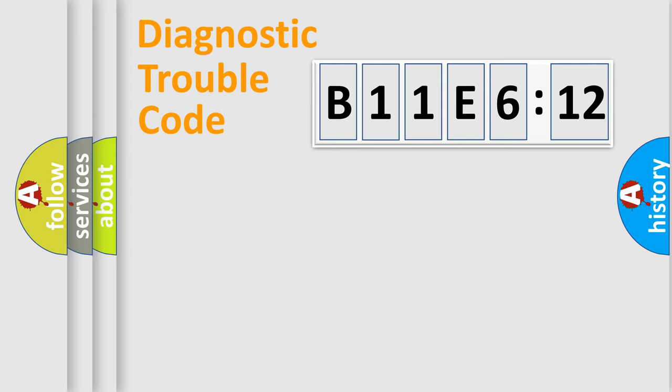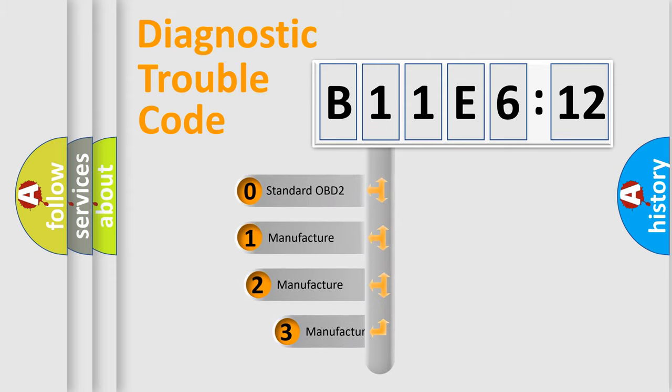Powertrain, Body, Chassis, and Network. This distribution is defined in the first character code.